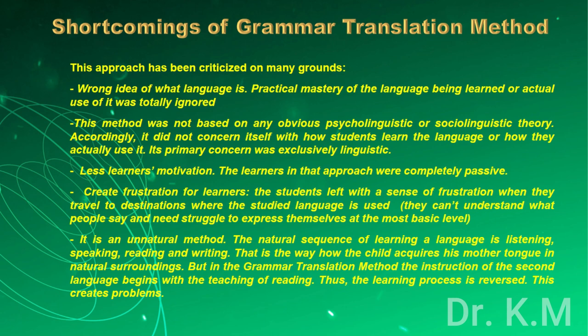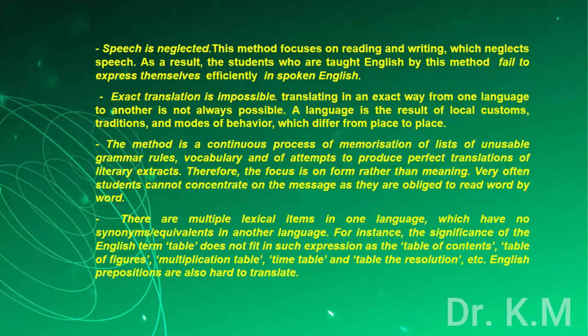It is an unnatural method. The natural sequence of learning a language is listening, speaking, reading, and writing — the way a child acquires their mother tongue in natural surroundings. But in the grammar translation method, instruction of the second language begins with the teaching of reading, thus reversing the learning process, which creates problems. Speech is neglected: this method focuses on reading and writing, neglecting speech. As a result, students taught English by this method fail to express themselves efficiently in spoken English.